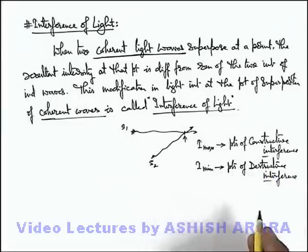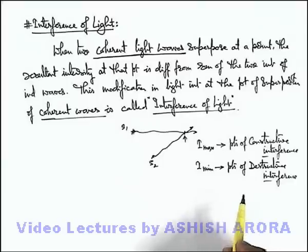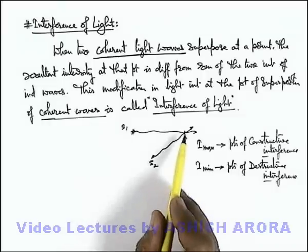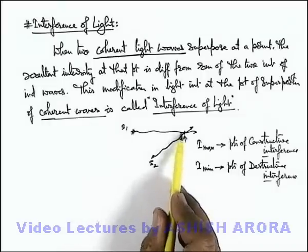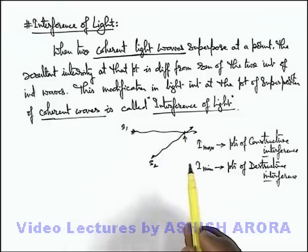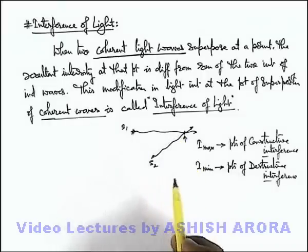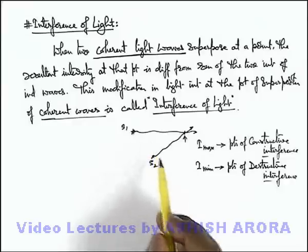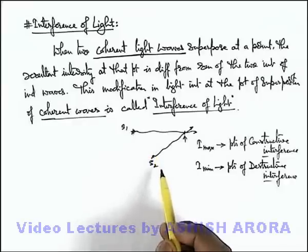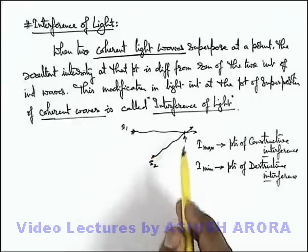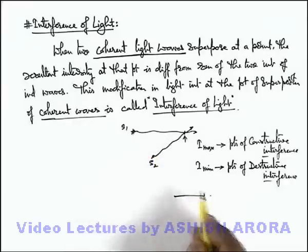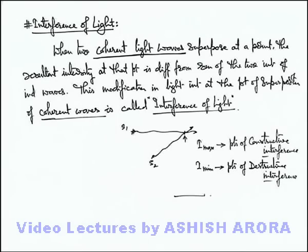In coming sections we are going to analyze mathematically about the intensity of light at the point of superposition, in terms of individual intensities as well as the phase difference between the 2 waves at the point of superposition. Let's continue in detail with the theory of interference from the coming section.